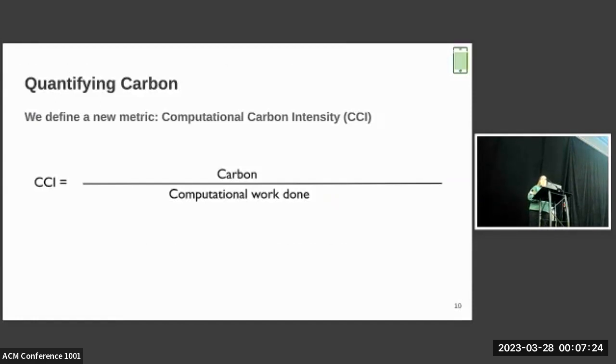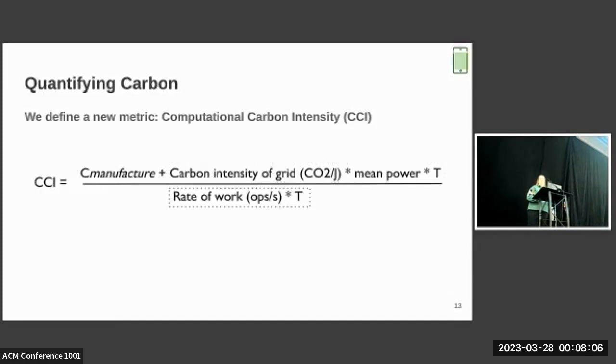Let's talk about what carbon efficiency means. When we talk about carbon efficiency, we're not just talking about the total carbon footprint. What we care about is how well we're actually making use of that carbon expenditure. For this paper, we defined a new metric, which we call computational carbon intensity (CCI), and it's simply the ratio of the carbon expenditure over a device or system's entire lifetime to the amount of computational work done throughout that lifetime. We can further break the numerator into the carbon from manufacturing and the carbon from use, and as long as we know the carbon intensity of our grid power, the mean power of our system, and our lifetime, we can get a good estimate for the carbon footprint of the use phase.